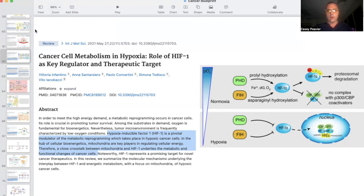I think the best place to start is to talk about the normal function of HIF-1. HIF stands for hypoxia-inducible factor 1. There are actually three known proteins in eukaryotic physiology: HIF-1, 2, and 3. However, the majority of the literature talks mostly about HIF-1, although we'll see HIF-2 pop up in some of the graphics later on. In order to meet the high energy demand, a metabolic reprogramming occurs in cancer cells. Its role is crucial in promoting tumor survival. Among the substrates in demand, oxygen is fundamental for bioenergetics.